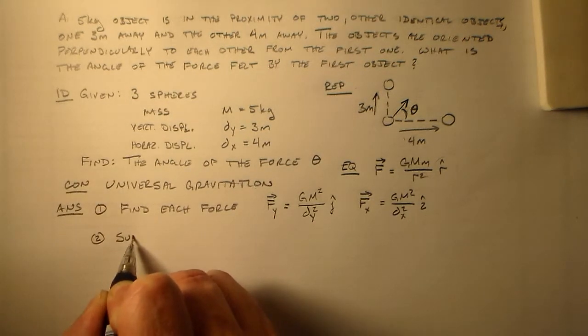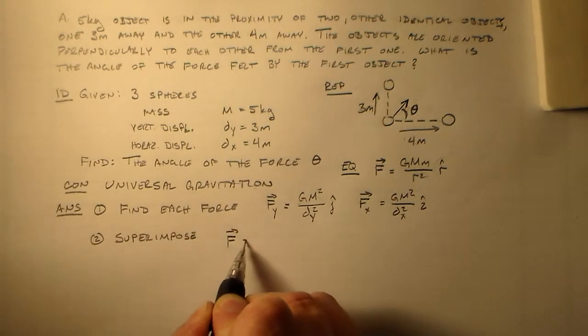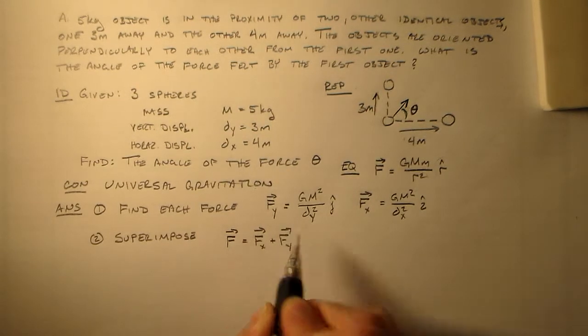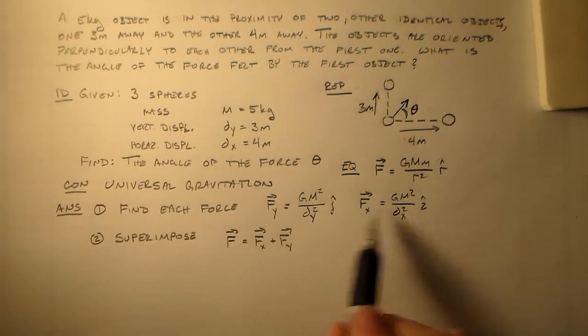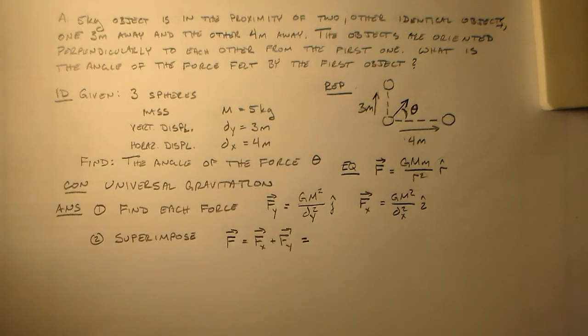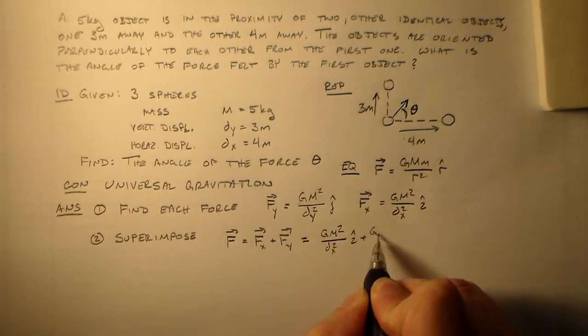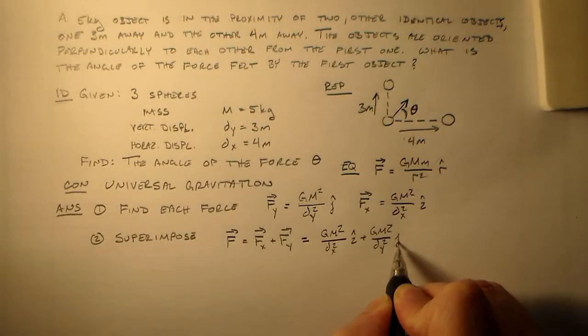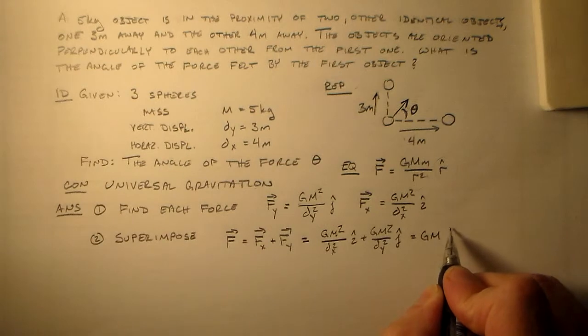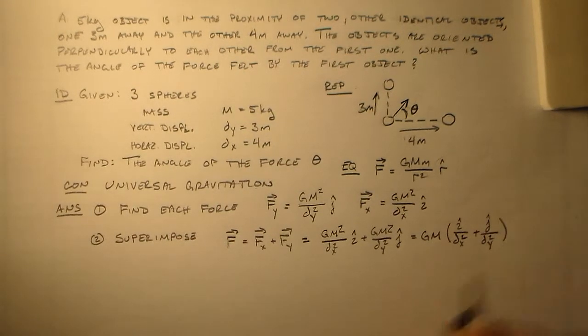The next thing we want to do is superimpose. So that means that the total force is equal to the force in the X direction plus the force in the Y direction. We could do this even if these were mixed, it's just vector addition, just happens to be a nice problem where we know what's going on in the Y direction and we know what's going on in the X direction. It could be a less nice problem where we have lots of different strange things going on in the different directions. But it's not. It's a nice problem. So let's just live with that and be happy. Alright, so that's GM squared DX squared in the I hat direction plus GM squared DY squared in the J hat direction, which is equal to GM I hat over DX squared plus J hat over DY squared.